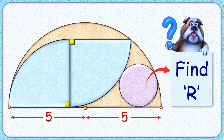Welcome to this interesting question where we have two quadrants and a circle inside a semicircle with radius 5 centimeters. The exciting part is that with this limited data we have to find the radius of this circle.